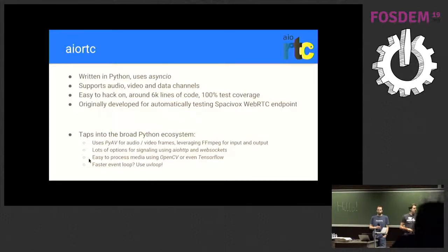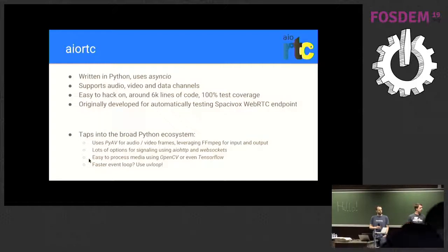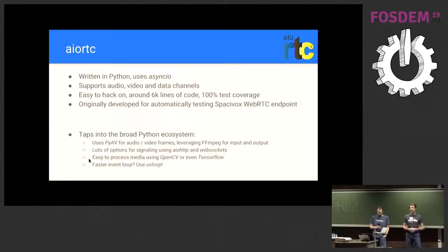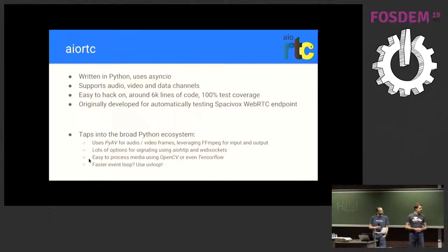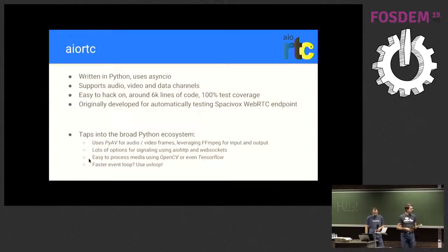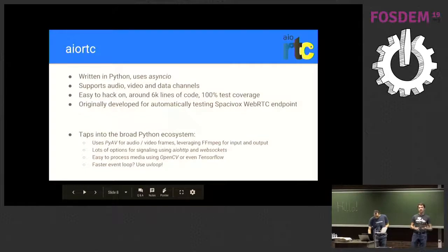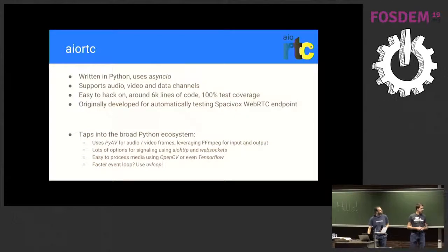As a Python project, one of the key selling points is tapping into the broad Python ecosystem. For audio and video frames, AIO RTC relies on the PyAV project, a binding to FFmpeg, which gives you a lot of power whether reading media from MP4 files or an RTSP stream. The Python ecosystem also gives you lots of options for building signaling solutions — modules like AIO HTTP and websockets are very handy — and for image processing or machine learning with projects such as OpenCV and TensorFlow, it's easy to feed media frames into these projects.